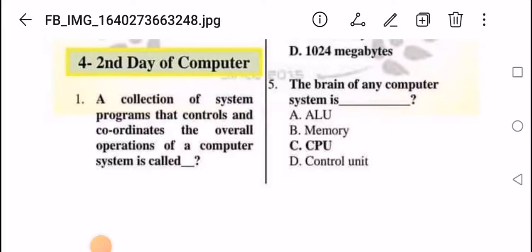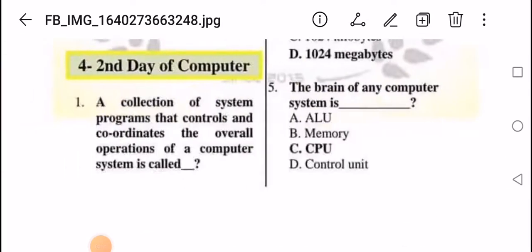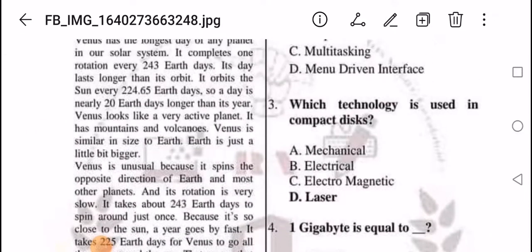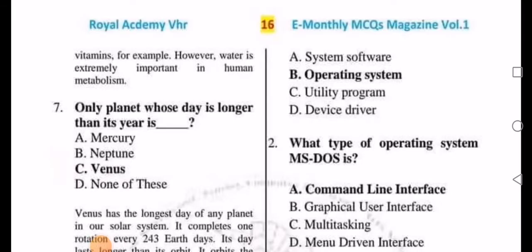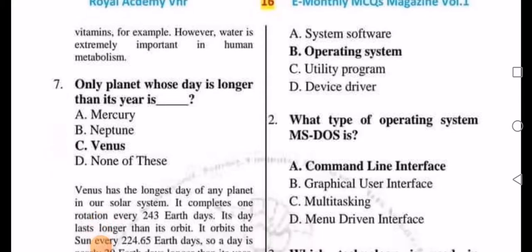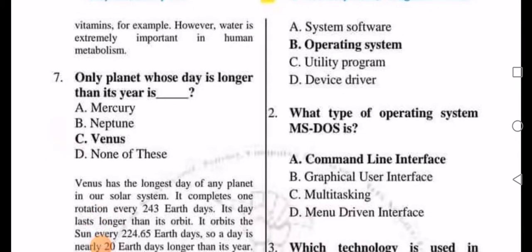Second day of computer. A collection of system programs that control and coordinate the overall operation of a computer system is called system software, operating system, utility program, or device driver. So the answer is B, operating system.